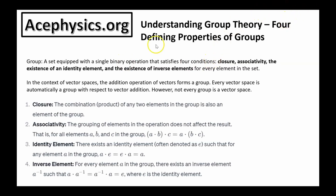Here I discuss the four defining properties of groups. A group is a set equipped with a single binary operation that satisfies four conditions: closure, associativity, the existence of an identity element, and the existence of an inverse element for every element in the set. Closure: the product of any two elements in the group is also an element in the group. Associativity: the grouping of elements in the operation does not affect the result. Identity: there exists an identity element such that for every element A, A times the identity equals A. Inverse: for every element A, there exists an inverse such that A times A-inverse equals the identity.